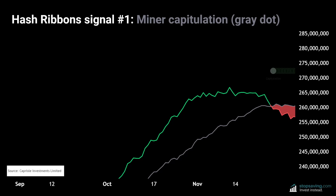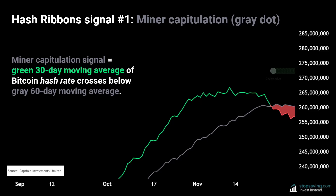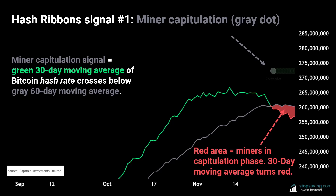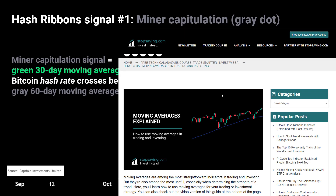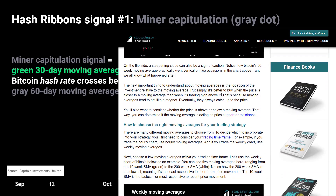First is the miner capitulation signal. Here, miners start selling Bitcoin to cover their operational costs. Lower Bitcoin prices and/or higher electricity costs hurt miners' profits, so more miners switch off their machines. That typically causes the hash rate to drop, with its 30-day moving average — the bright green line — crossing below its 60-day moving average, which is the gray line. This cross shows downward momentum for the hash rate and triggers the miner capitulation signal. After that, the chart's red area shows miners are in the capitulation phase, and the 30-day moving average also turns red.